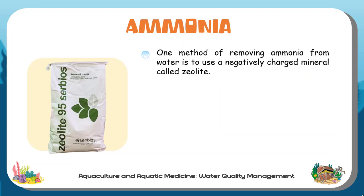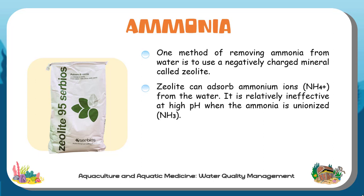One method of removing ammonia from water is to use a negatively charged mineral called zeolite. Zeolite can absorb ammonium ions from the water. It is relatively ineffective at high pH when the ammonia is unionized, because ammonia nitrogen is mostly in the non-toxic ionized form. At low pH, zeolite may not be extremely effective at reducing toxicity either.